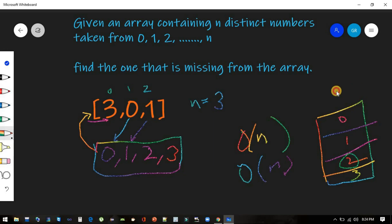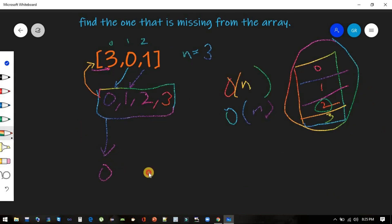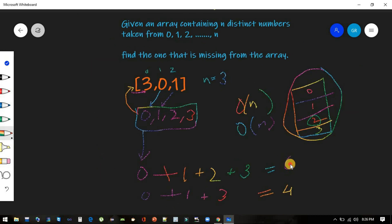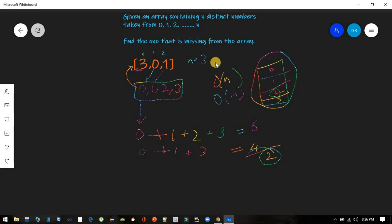If we try to sum it up: zero plus one plus two plus three, what will it give us? It will be 6. And if we do zero plus one plus three, that will give us 4. And if we try to see the difference, it will be 2, which is our missing number.